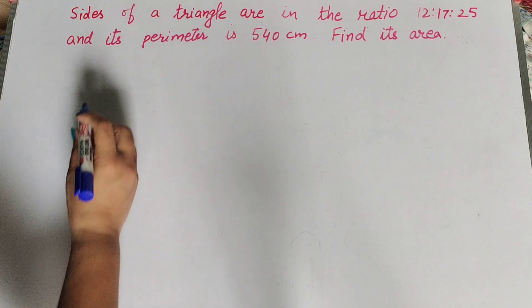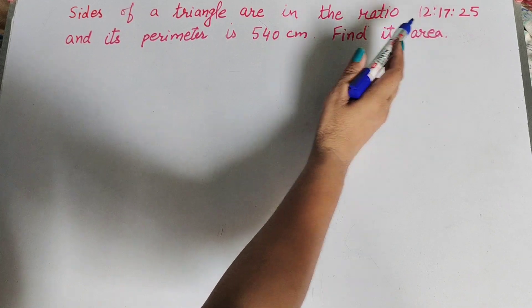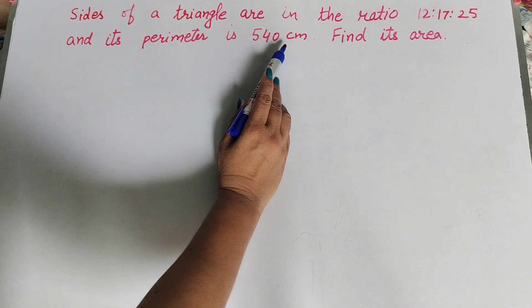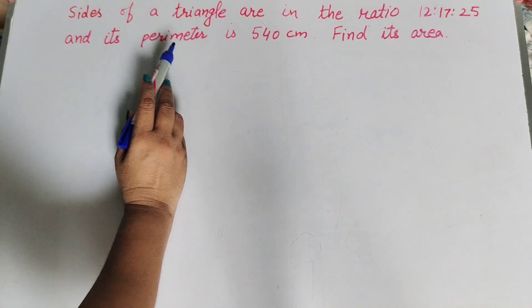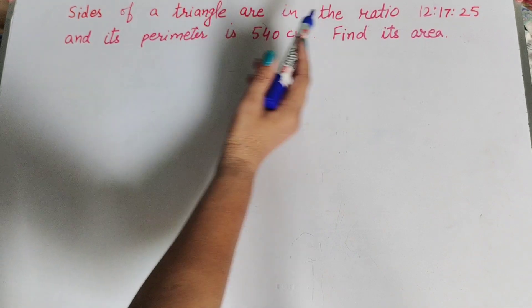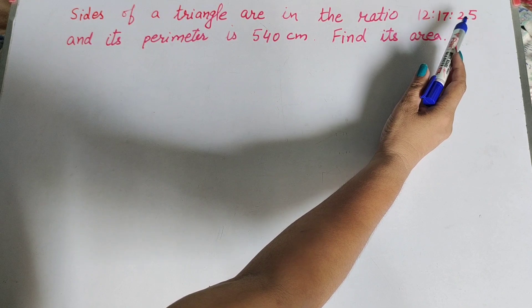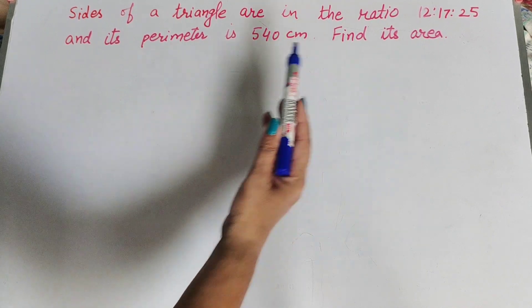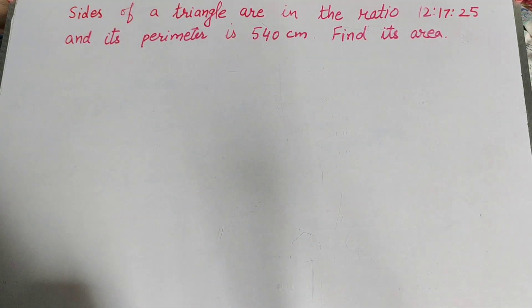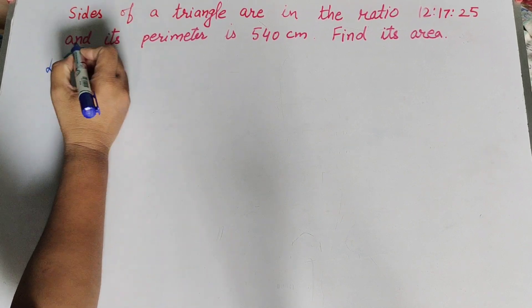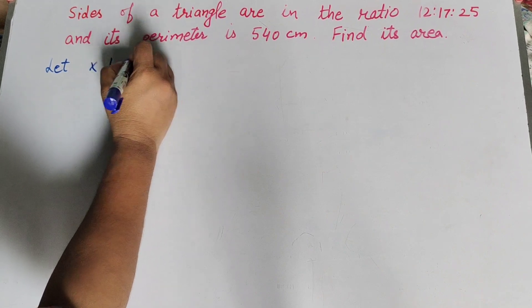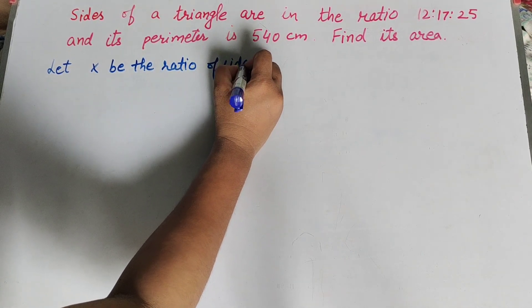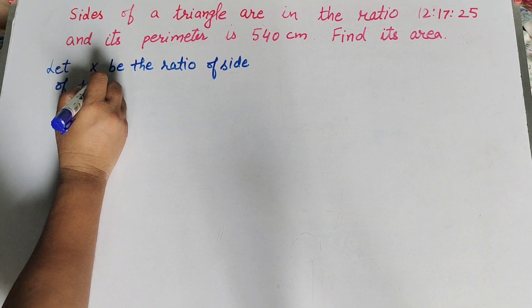Hello friends, welcome to my channel. In this video we discuss: the sides of a triangle are in the ratio 12:17:25 and its perimeter is 540. Find its area. The given information is the ratio of sides of the triangle is 12:17:25 and the perimeter of the triangle is 540 centimeters. We need to find its area. So first, let X be the ratio of sides of the triangle.